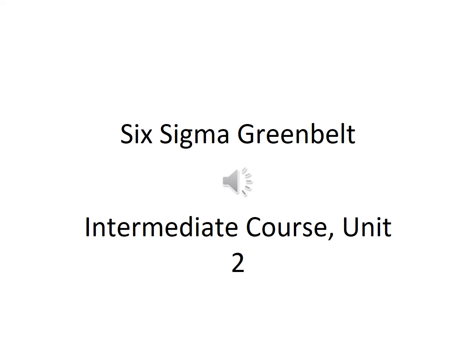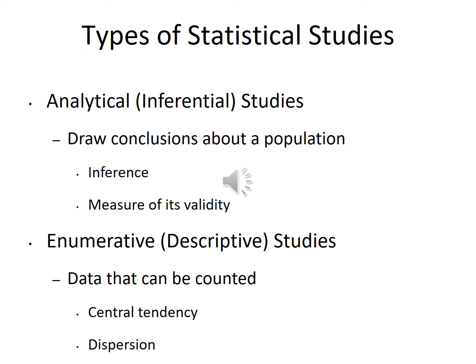This is Unit 2 of the intermediate course. There are basically two types of statistical studies. One is the analytical or inferential study, where you take a sample and based on that sample try to draw conclusions about the population — things like polls, presidential elections, and Nielsen ratings.